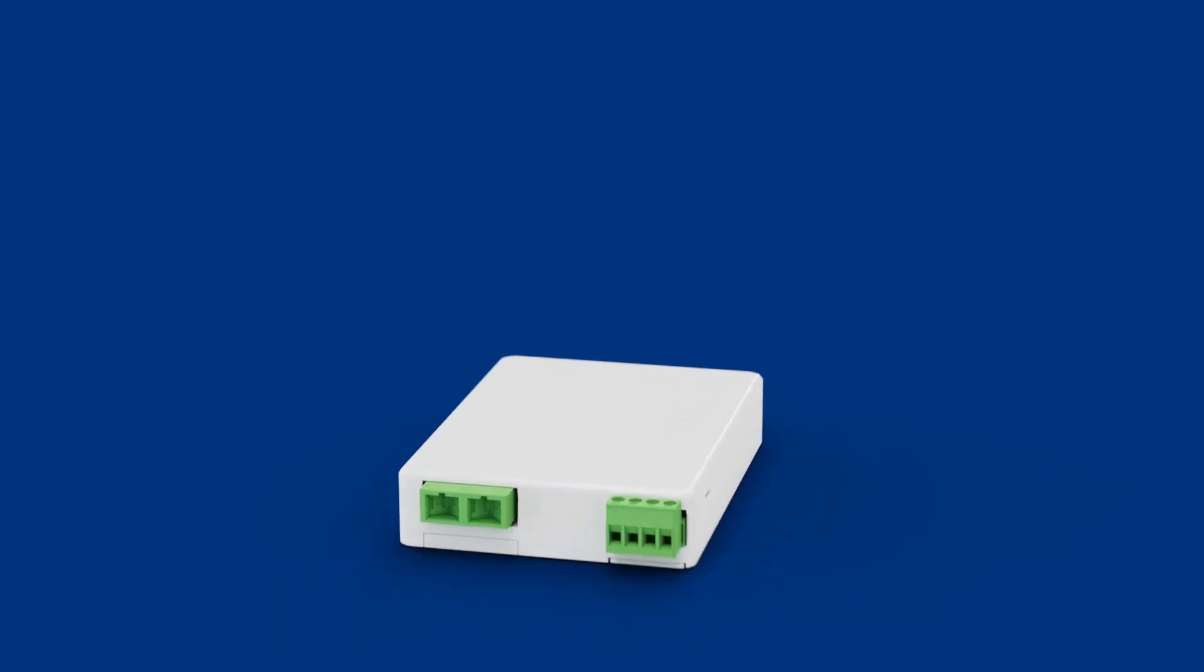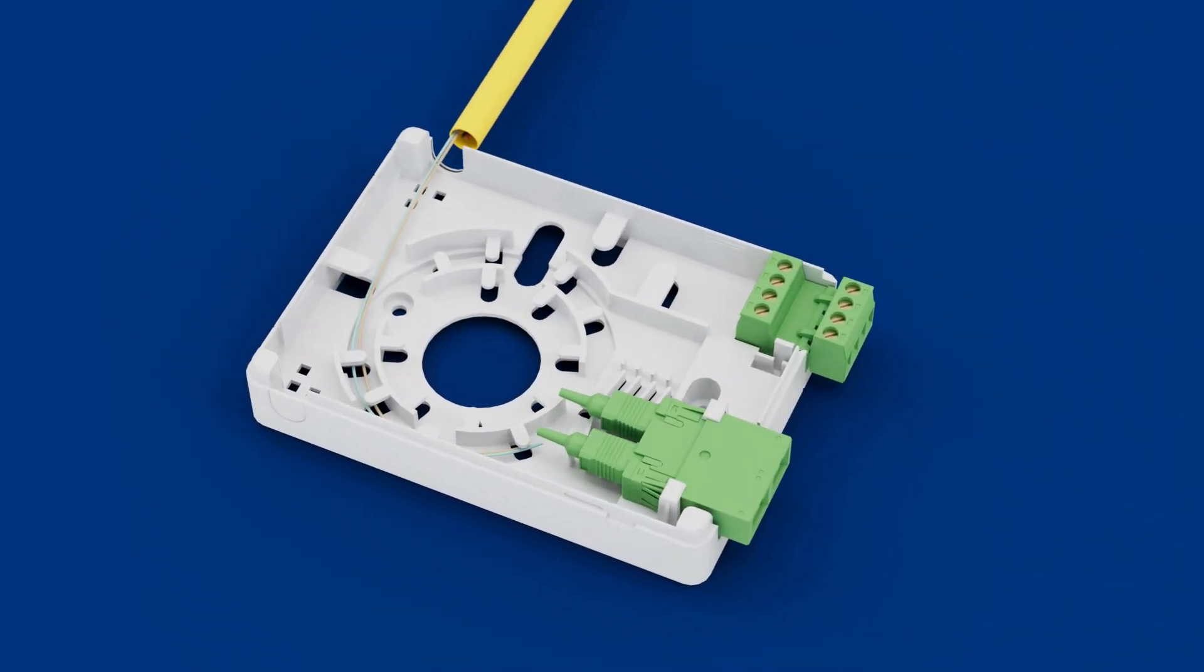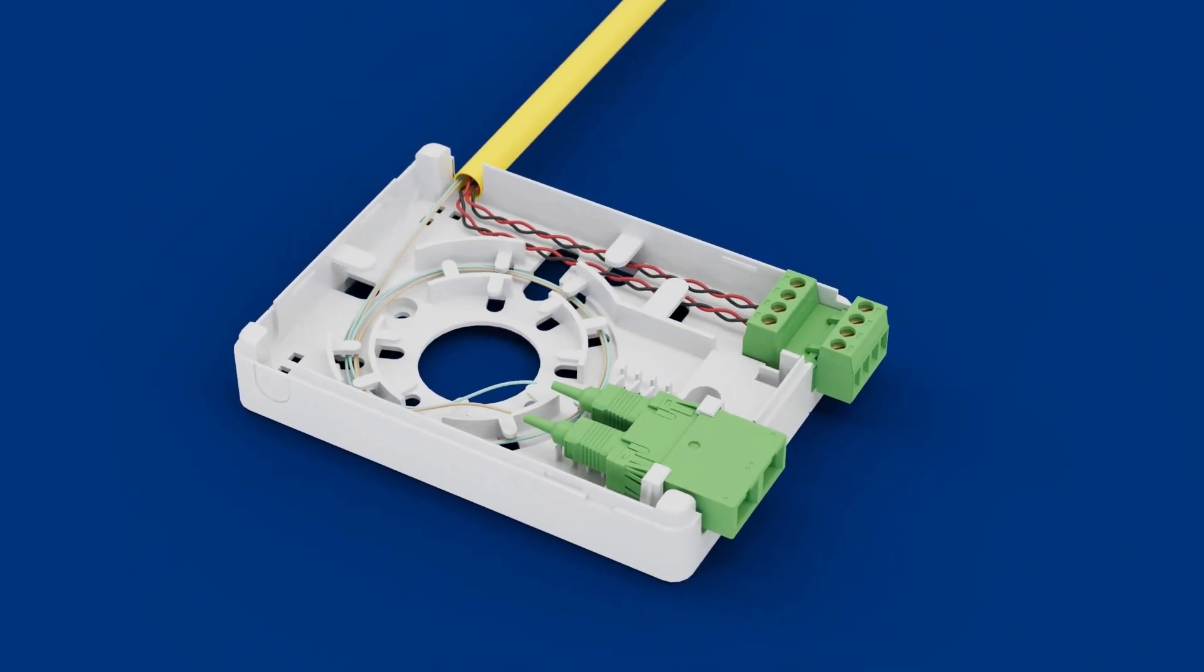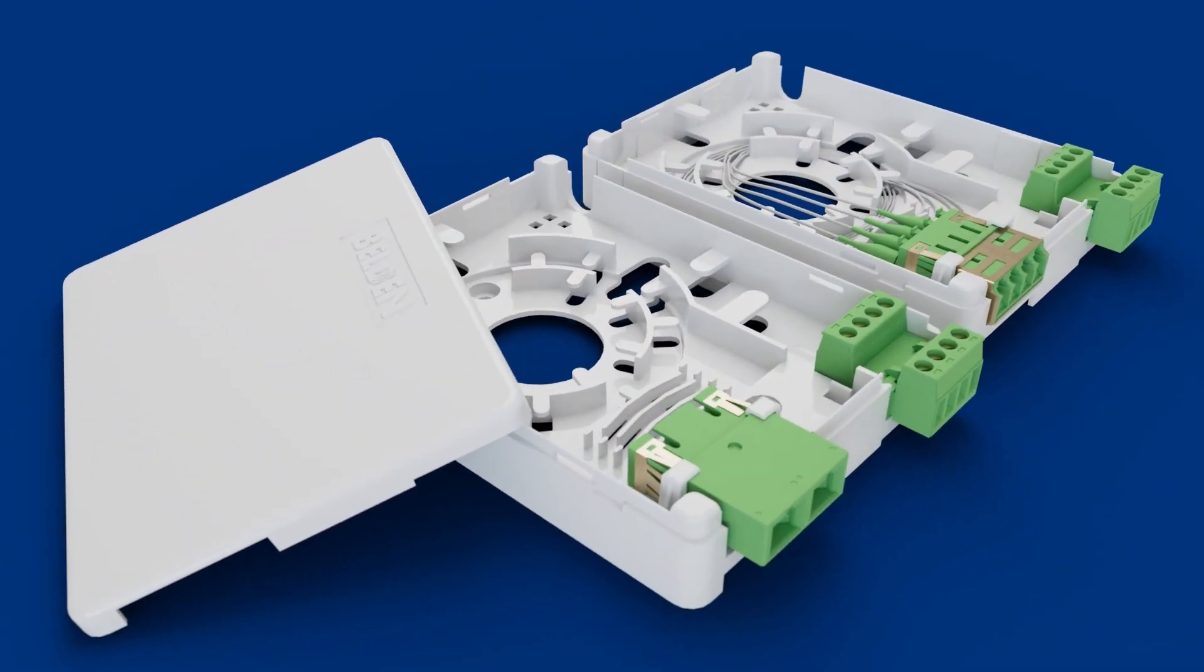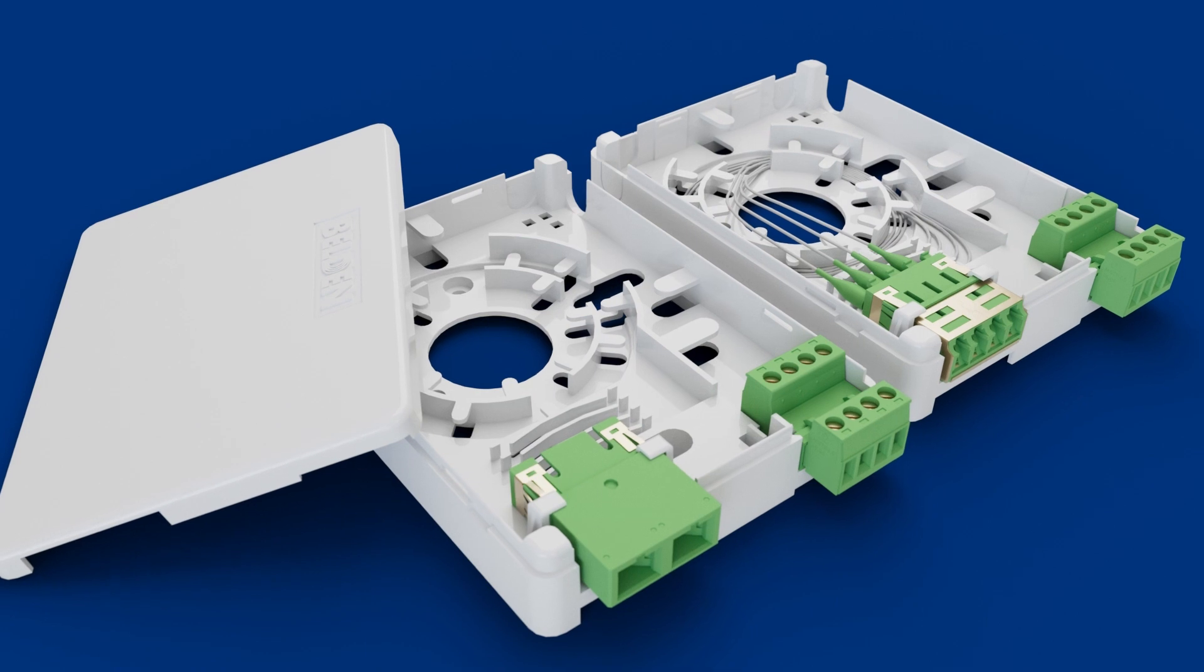Fiber and copper are separated, protecting exposed fibers from damage caused by copper conductors. The Hybrid Termination Box is available in two versions, adapter only or preloaded with pigtails.